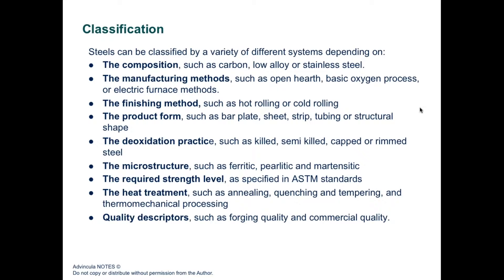Steels can be classified in a variety of ways: by composition (amount of carbon and alloying elements), by manufacturing methods such as open hearth, basic oxygen process, or electric furnace. They can also be classified by finishing — hot rolling or cold rolling — or by product forms such as bar, plates, sheets, strips, tubing, or other structural shapes. Deoxidation practice classifies them as killed, semi-killed, capped, or rimmed steel.